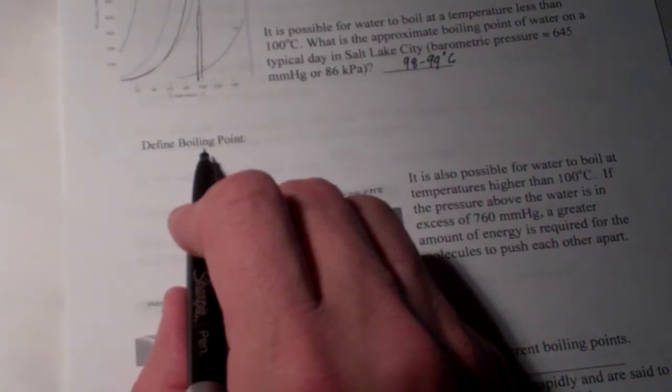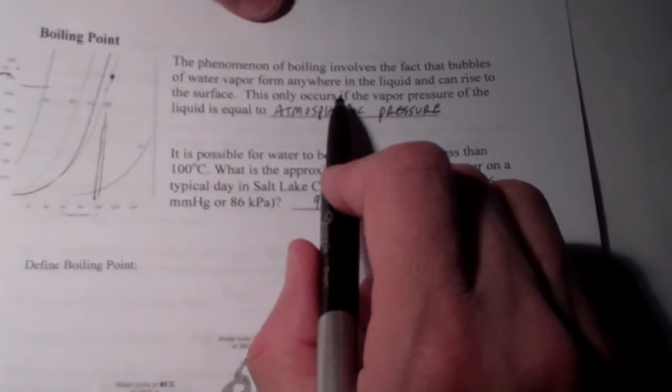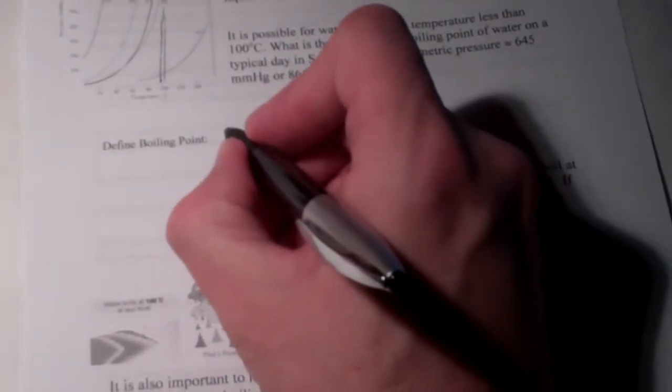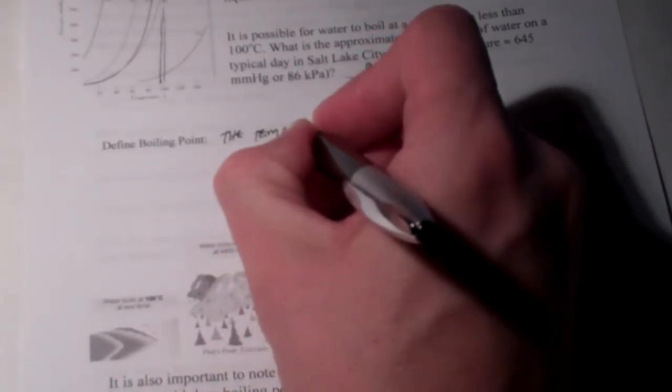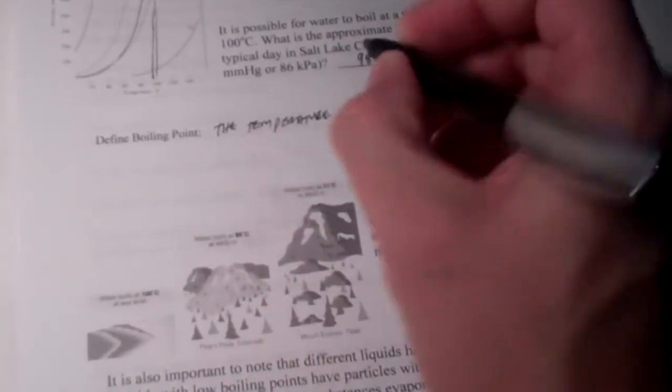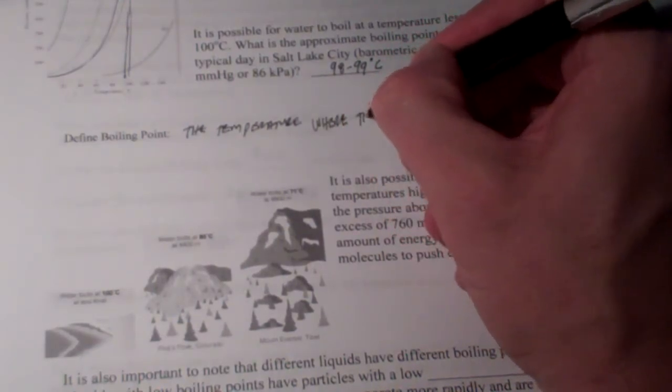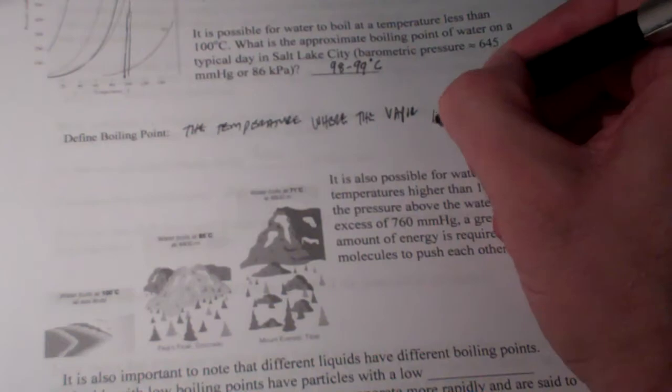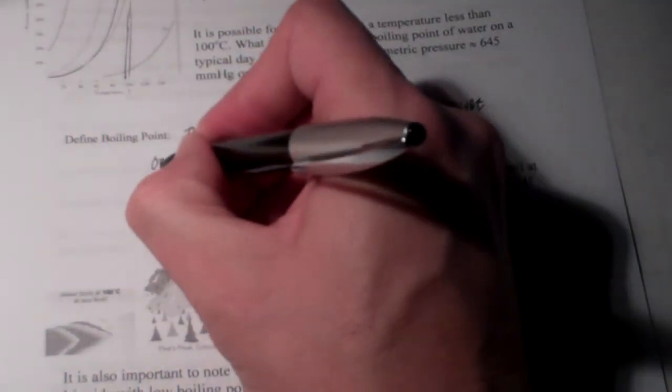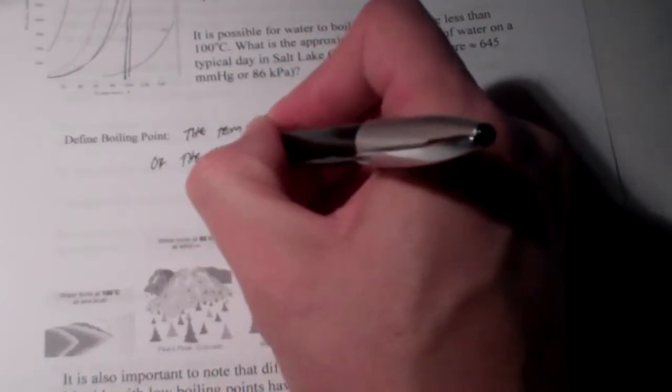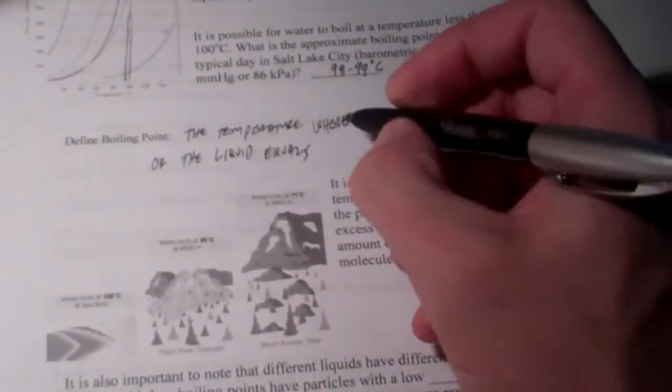A better definition for boiling point instead of the one that we use up here where bubbles of a gas form throughout the liquid is the temperature where the vapor pressure of the liquid equals atmospheric pressure.